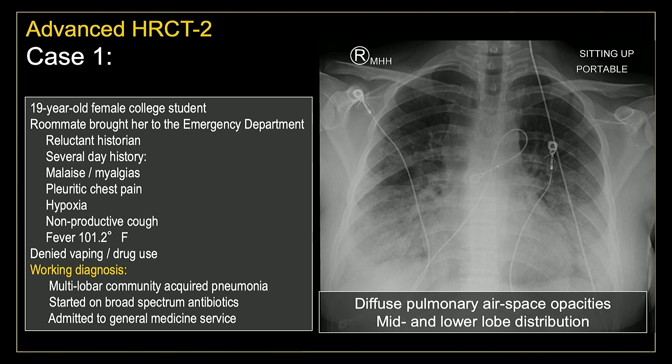We're going to begin with our first case. Even though this is an HRCT track, I'm going to begin with a chest x-ray, because this is typically how this particular patient population presents. Our first patient is a 19-year-old female college student. Her roommate brought her into the emergency department, and they were really reluctant to share any information. Over several days, she was complaining of progressive malaise and myalgias, pleuritic chest pain.